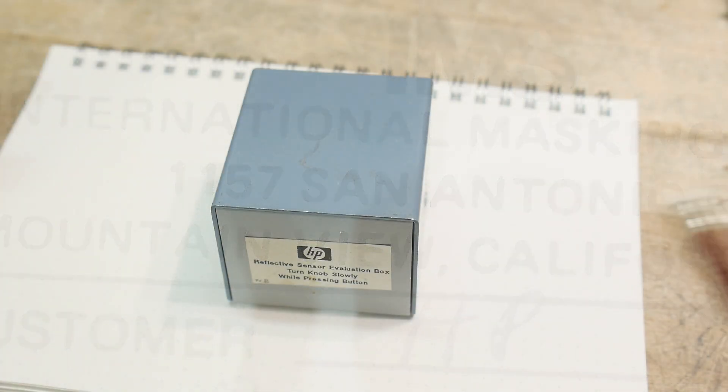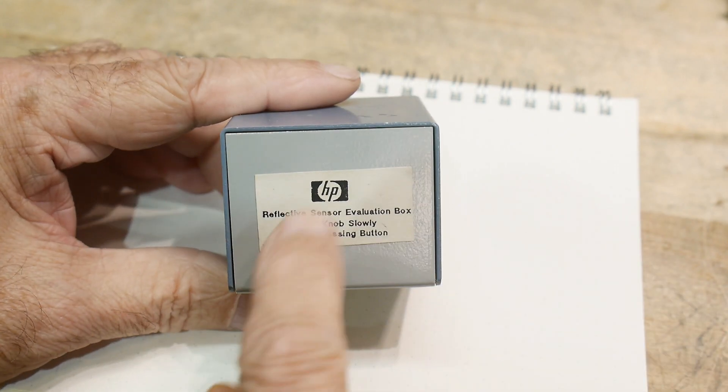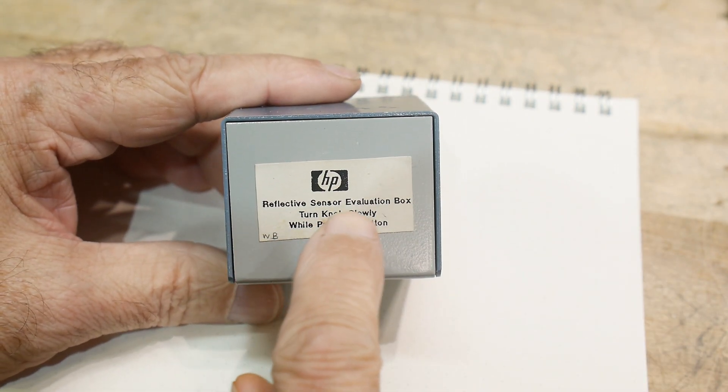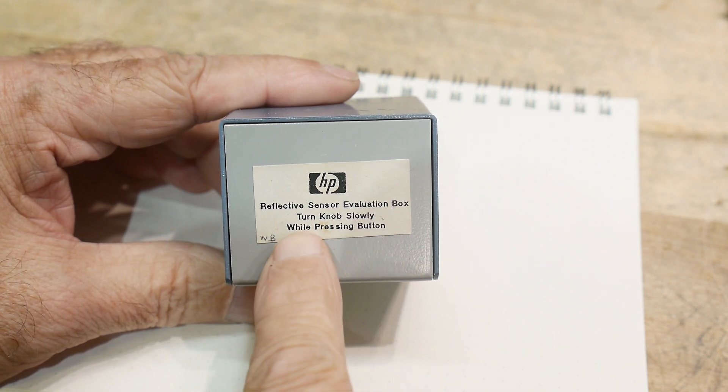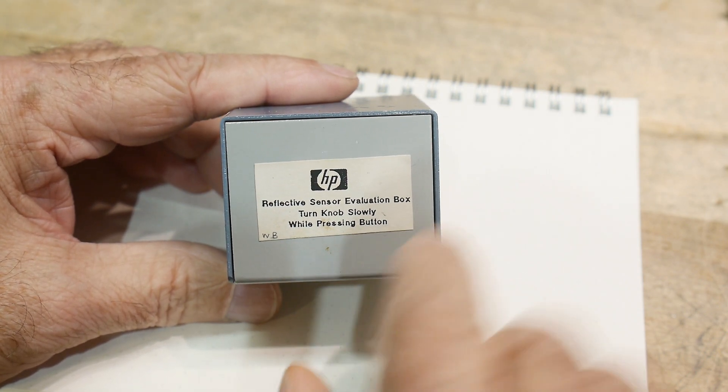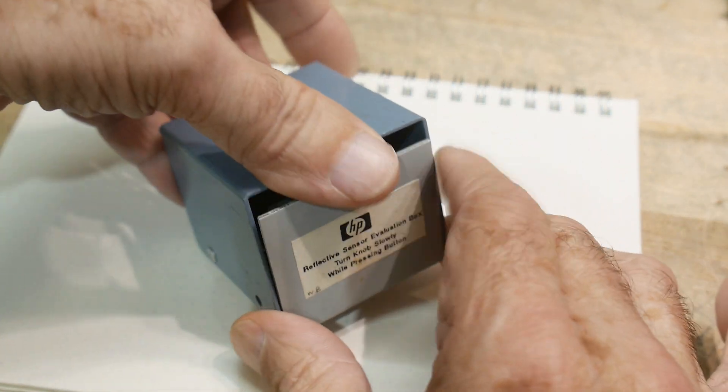All right. The last thing it gave me was this box. And this box says HP Reflective Sensor Evaluation Box. Turn knob slowly while pressing button. And it's in a little bud box and it's hinged.